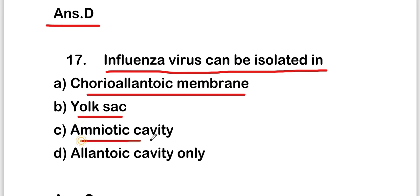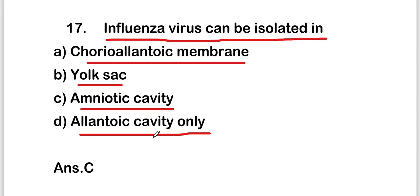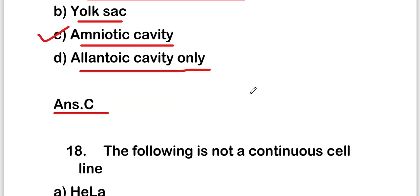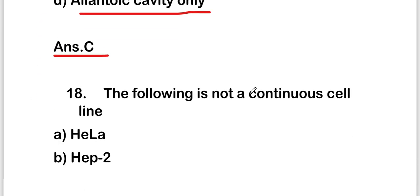The next question is: influenza virus can be isolated in which structure of the embryonated egg — chorioallantoic membrane, yolk sac, amniotic cavity, or allantoic cavity only? The right answer is option C — amniotic cavity.